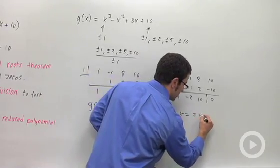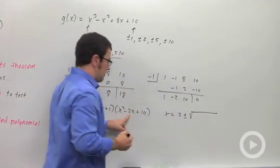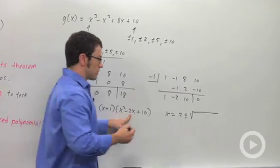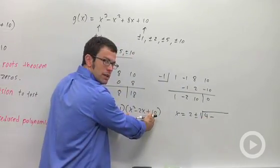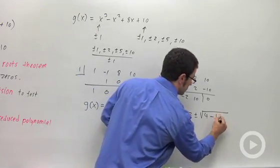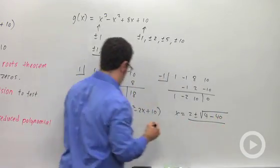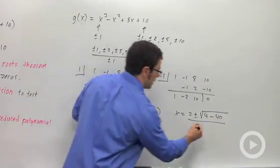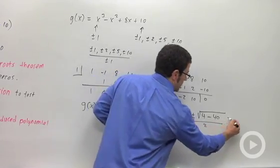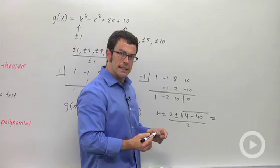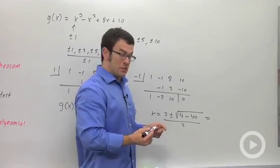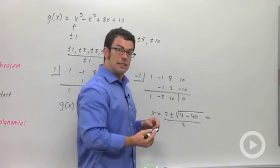So negative b, which is positive 2, plus or minus b squared, negative 2 squared is 4, minus 4ac, 4 times 1 times 10 is 40, over 2a, 2. So this is going to give me 2 plus or minus root negative 36. It's imaginary. Root negative 36 is 6i.